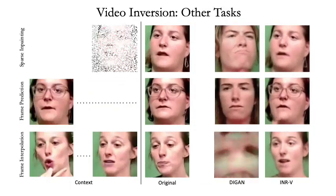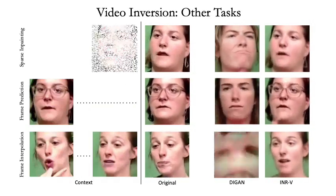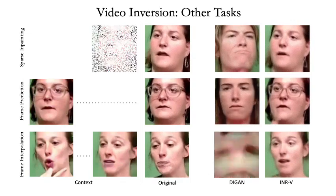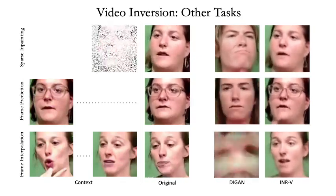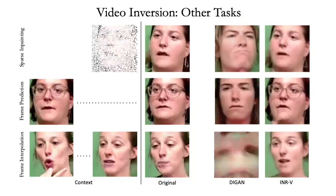Here we see some more tasks. In all of the tasks, INRV is able to regress to the correct identity and pose. In sparse inpainting, INRV is able to regress to the correct video despite the sparsity in context. For the tasks of frame prediction and frame interpolation, INRV is able to generate meaningful missing context while capturing the given context well.